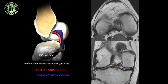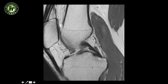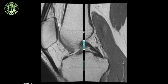As with the ACL, you can see the two bundles very well on imaging. The anterolateral bundle and the posteromedial bundle are well seen on axial as well as coronal images. On a sagittal image you can see the entire ligament, but you cannot easily differentiate between the two bundles. The ligament itself has a jet black appearance because of its tightly bound fibers.